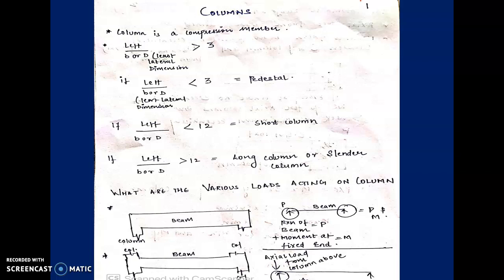Basically, anything standing along its length does not necessarily mean it is a column. According to the ratio of its effective length to its lateral dimension, the member behaves in a certain way. That behavior is that of a compression member if the dimensions are in a certain pattern. The effective length divided by the least lateral dimension should be greater than 3 — then and only then we consider it a column.